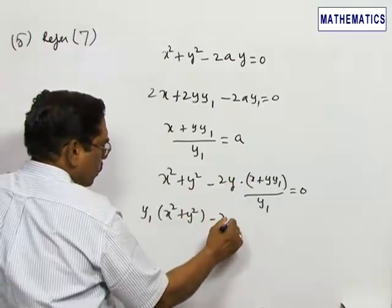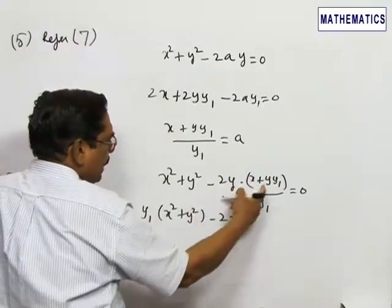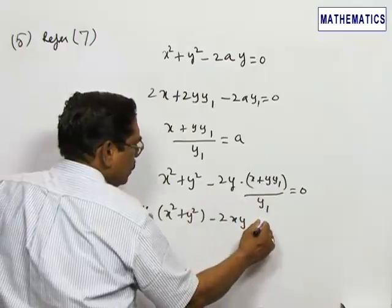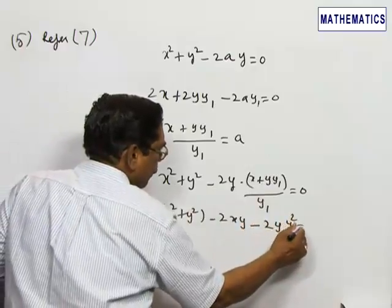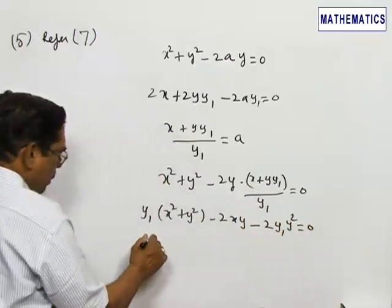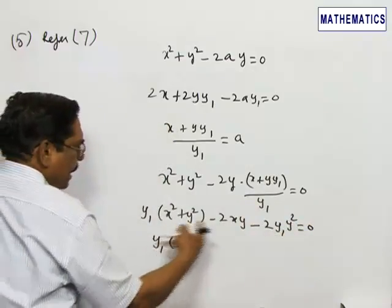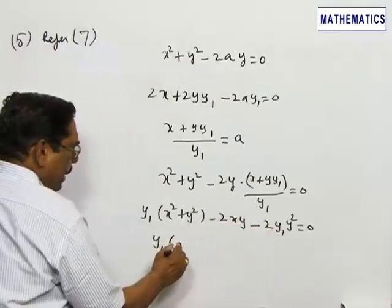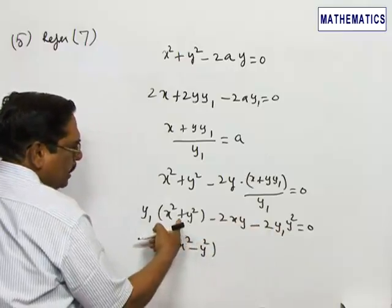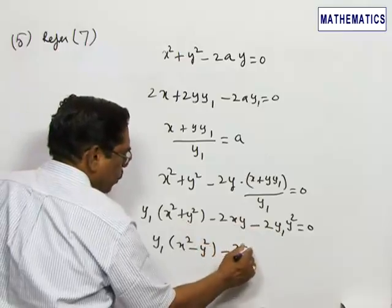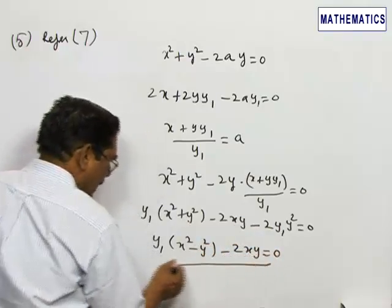This will be minus 2xy and that will be minus 2y1 into y squared. In other words, y1 into, I combine these two, therefore x squared, it will be minus y squared because here plus y squared plus y squared is there, minus 2xy is equal to 0.